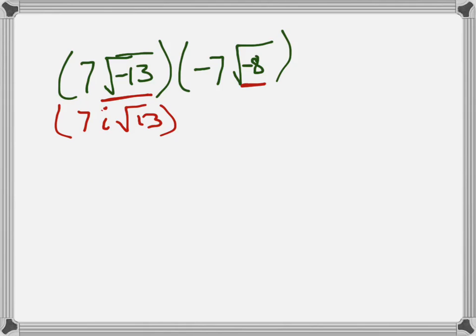Same with this one right here. This can be simplified because there's a perfect square factor in there. I'll go ahead and write the negative 7 times. Notice these are being multiplied, so that's negative 7 times 2i root 2.